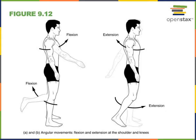Flexion and extension are movements through the sagittal plane. If the body starts in anatomical position, flexion will move the upper limb superiorly and anteriorly through the sagittal plane. Here we can see flexion occurring at the shoulder joint, also known as the glenohumeral joint. Flexion at the glenohumeral joint is raising the humerus from anatomical position through the sagittal plane, and the opposite movement, extension, returns the humerus back to anatomical position.